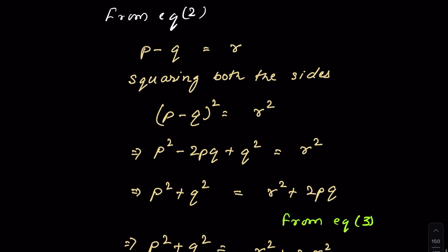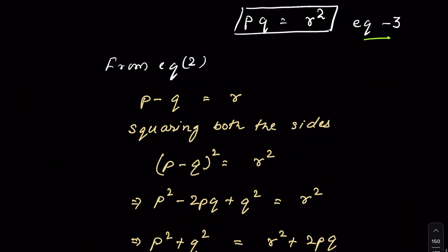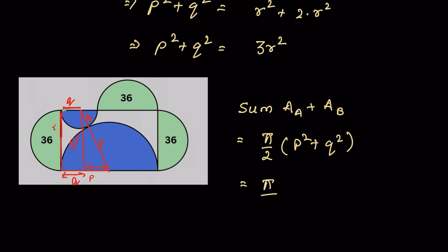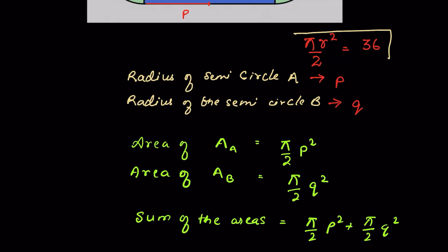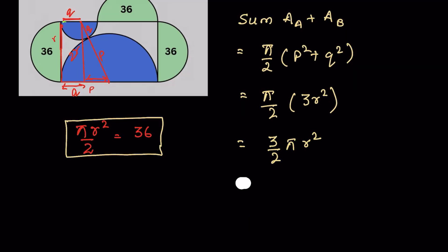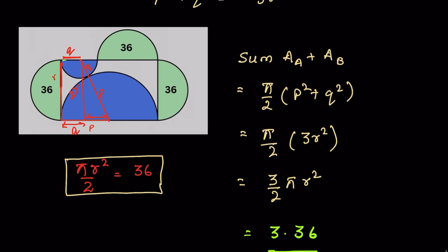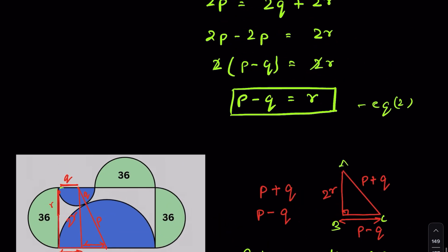Now recall our very first equation: the sum of the areas equals Pi upon 2 times (P squared plus Q squared). Substituting P squared plus Q squared equals 3R squared, and since Pi R squared upon 2 equals 36, we get sum of the two blue semi-circles equals Pi upon 2 times 3R squared equals 3 times 36 equals 108 square units. So this is the sum of the areas of the two semi-circles. How did you solve it? Let me know in the comment section. Thanks for watching.